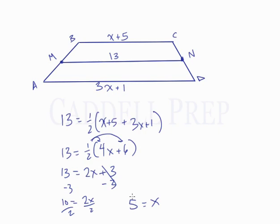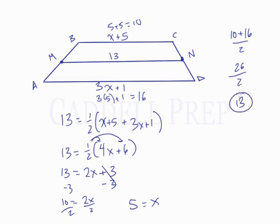So we're able to solve for the variable using this same principle here. Let's plug it in and make sure it works out. So we have 3 times 5 plus 1. That's 15 plus 1 is 16. And here we have 5 plus 5, which is 10. And the average of 10 and 16. 10 plus 16 is 26. Over 2 is 13. Just like it's supposed to be.